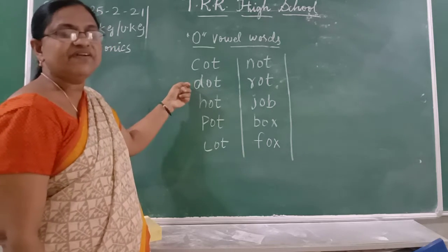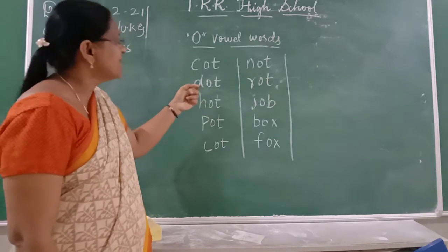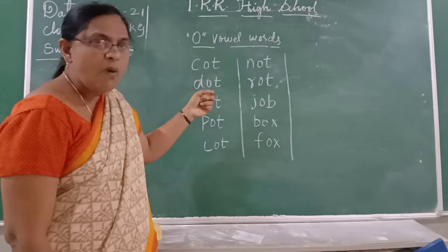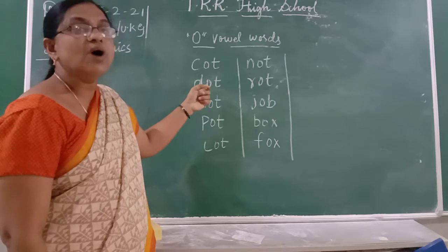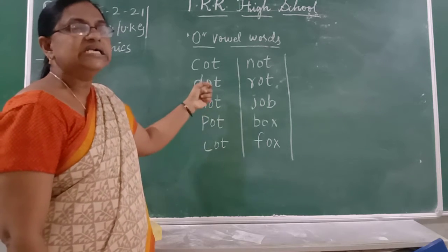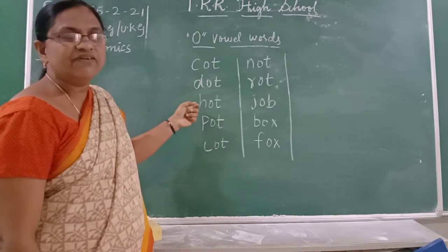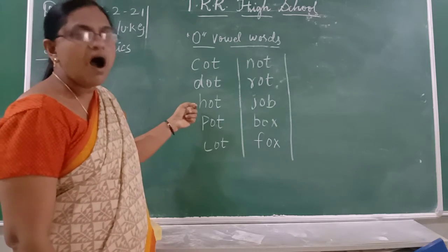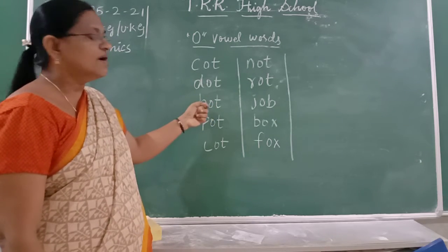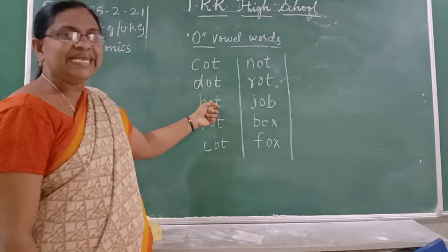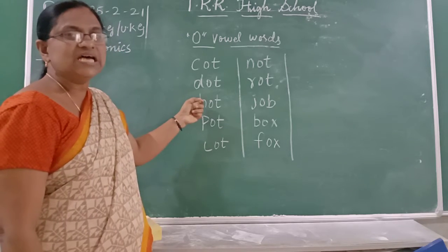Then we move on to the next word. What is the sound of a D? The sound of D is D. And the sound of O is O. And the sound of T is T. D-O-T. Hot. H-O-T.